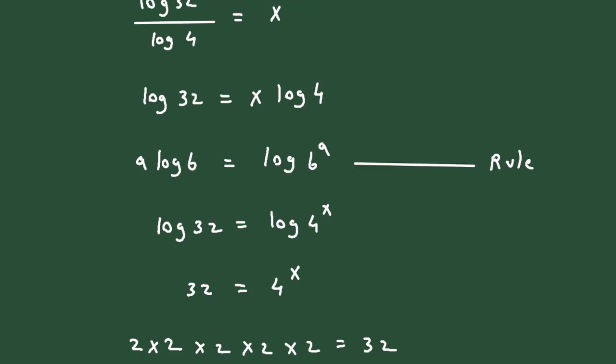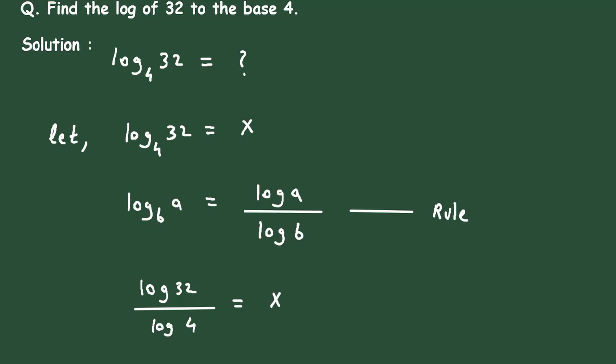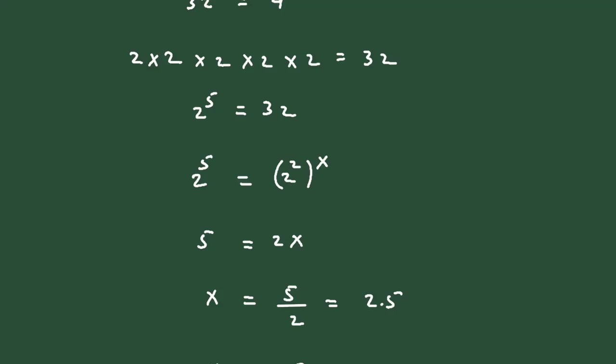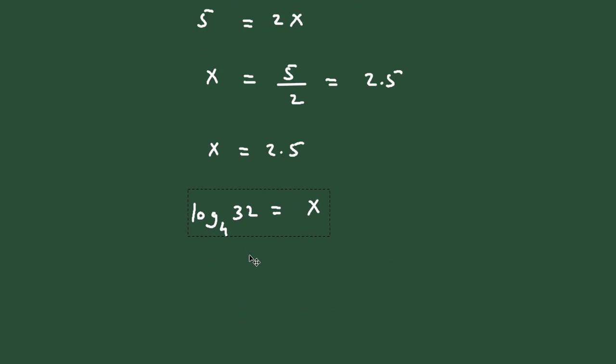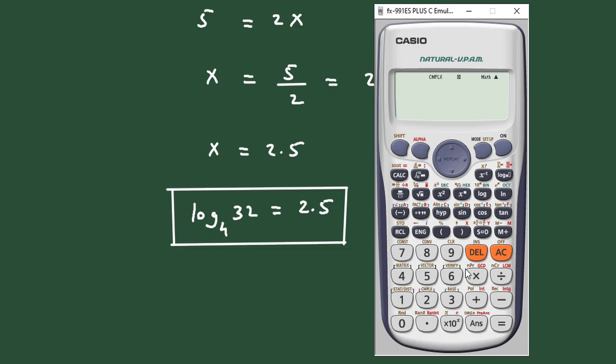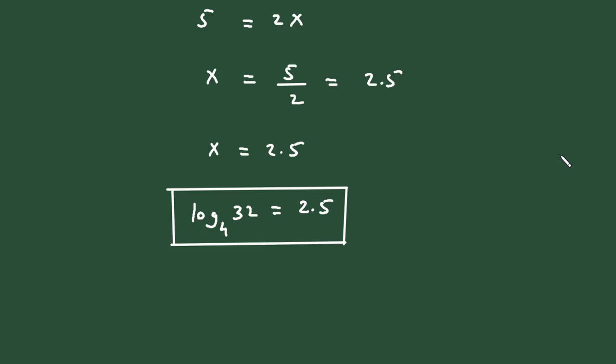What is x? We can substitute 2.5 in place of x. We can also verify our answer in a calculator. Log 32 to the base 4 equals 2.5. Hence this answer is correct.